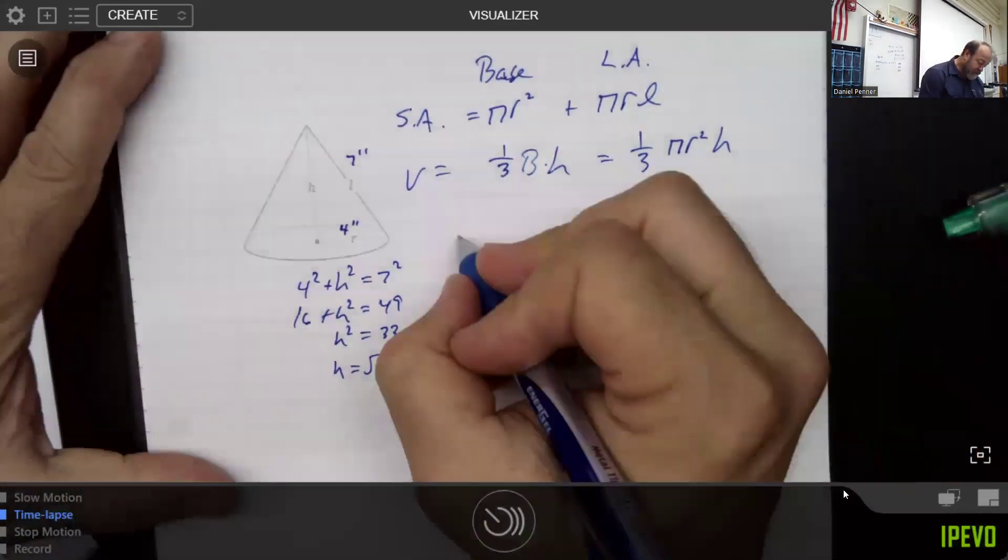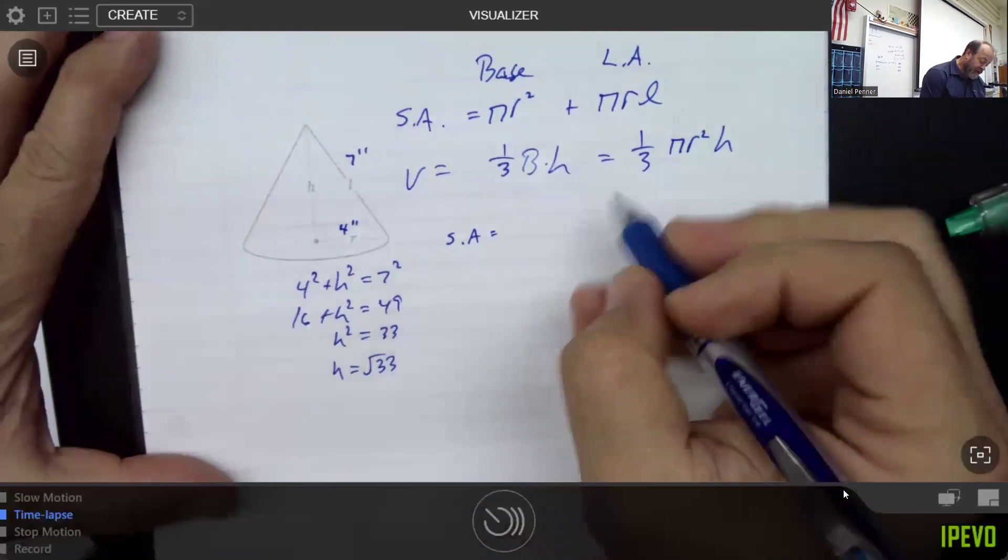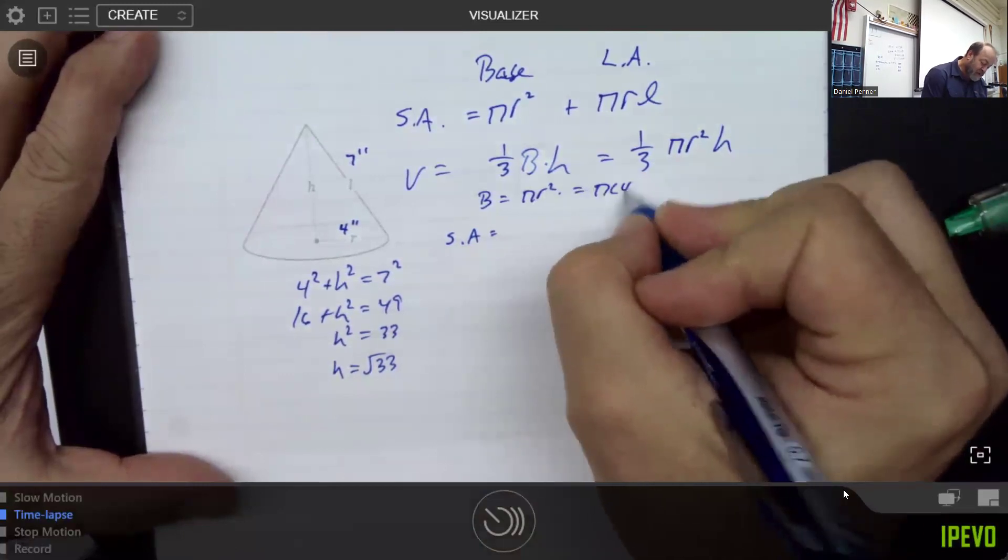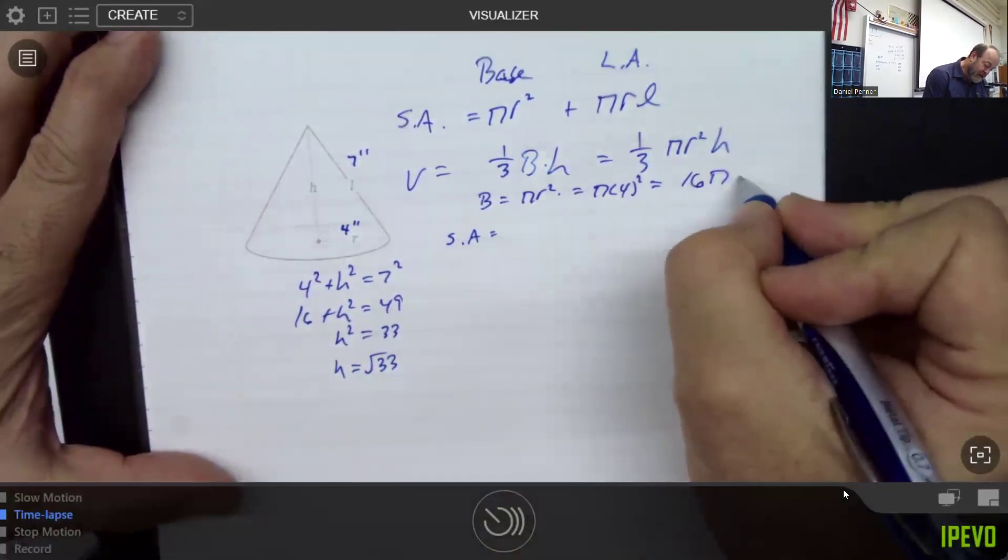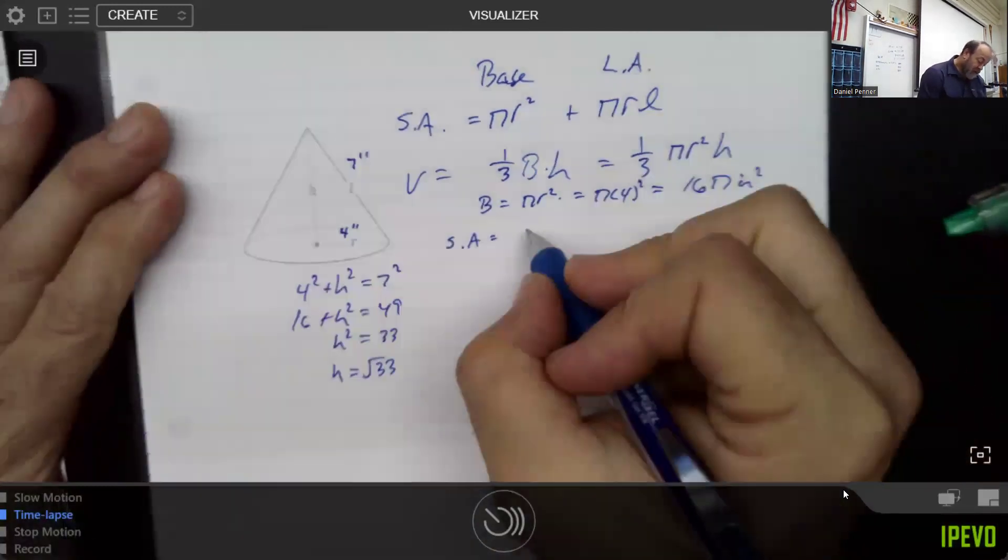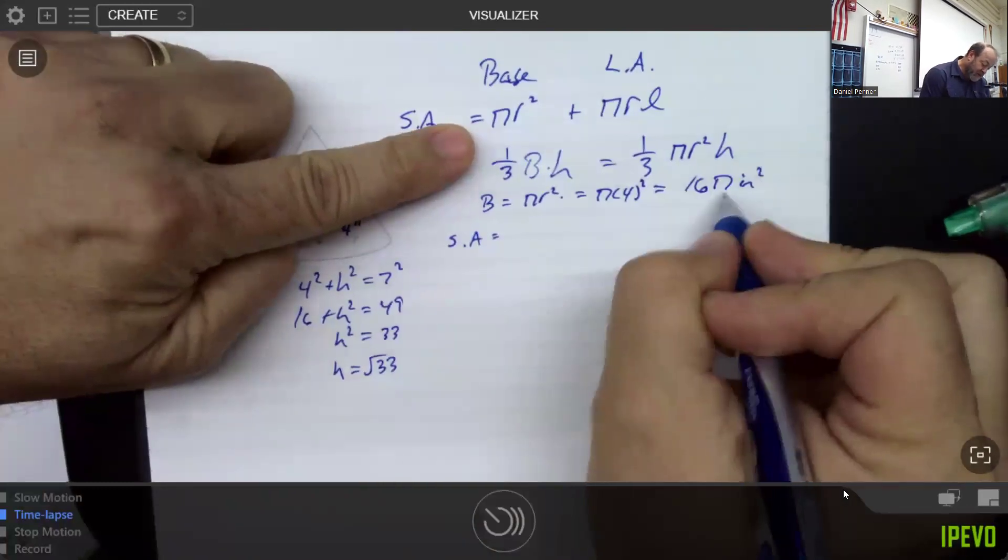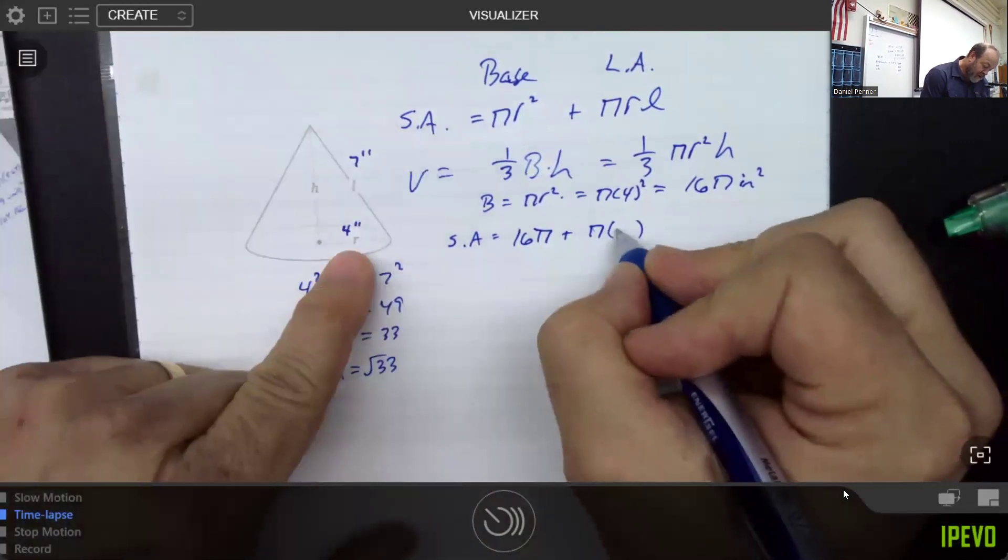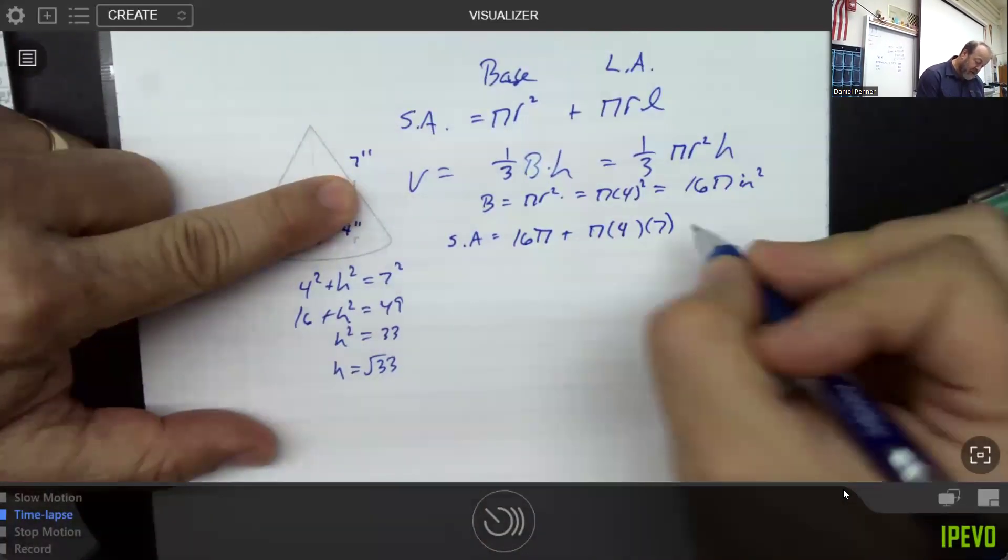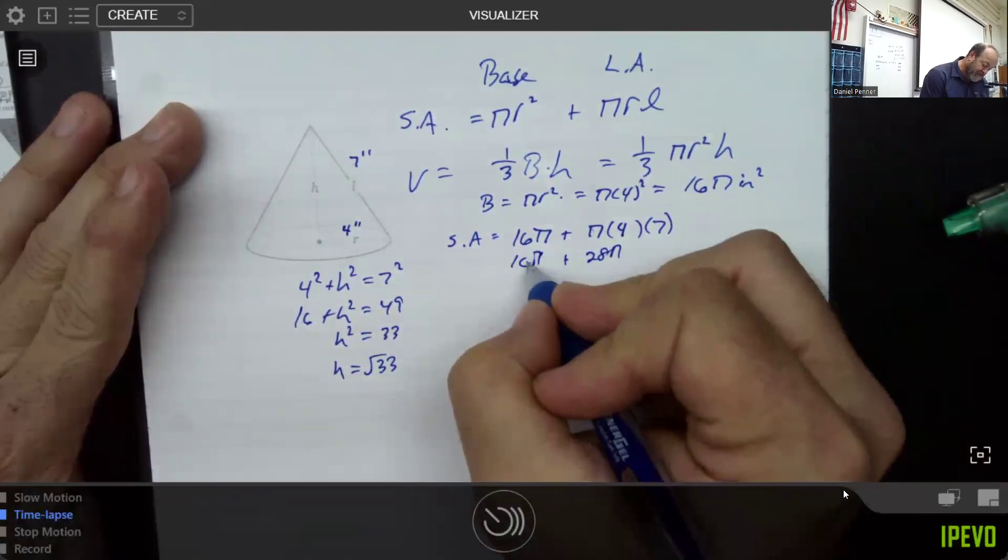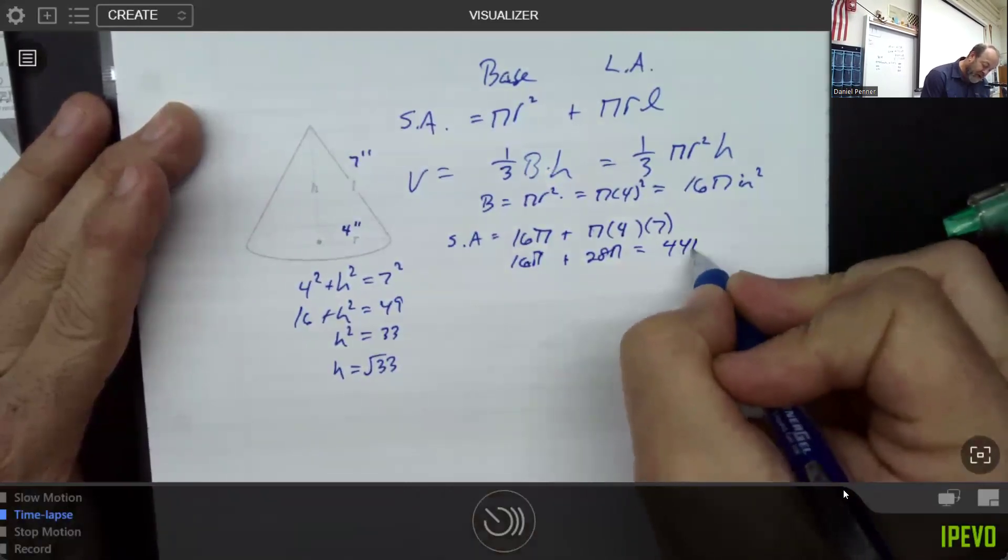So if we're looking for the surface area, first thing we should do is go ahead and find our base. And our base is pi r squared. So that'd be pi times four squared or 16 pi inches squared. Well, that makes it pretty nice because then the surface area would simply be pi r squared, which we already found 16 pi plus pi r L, which is seven. Four times seven, of course, is 28. Add that to the 16 pi that we already found for our base.